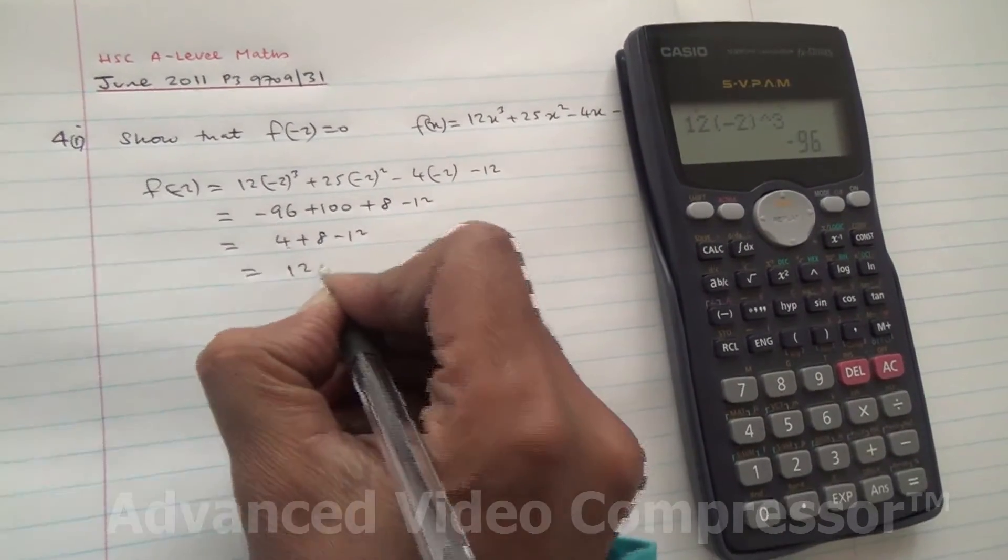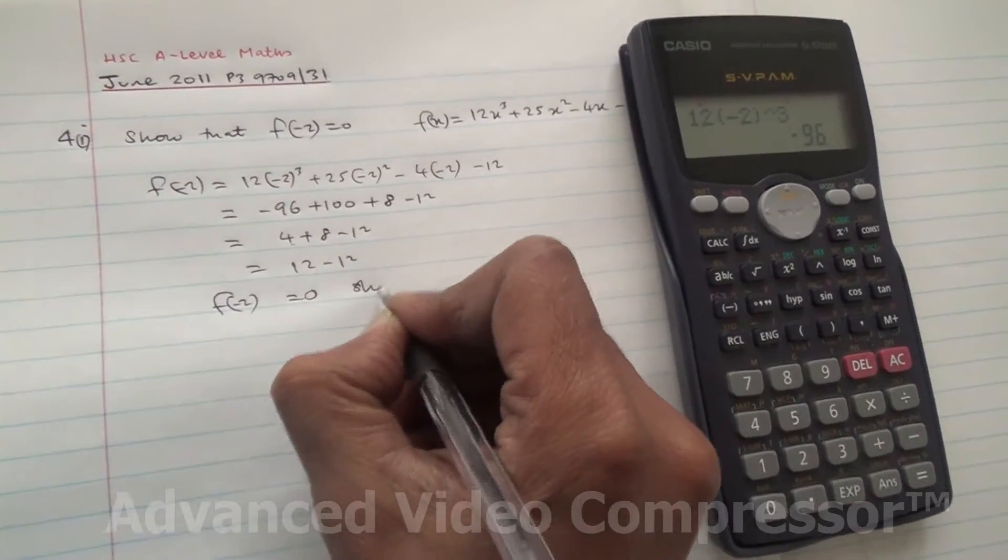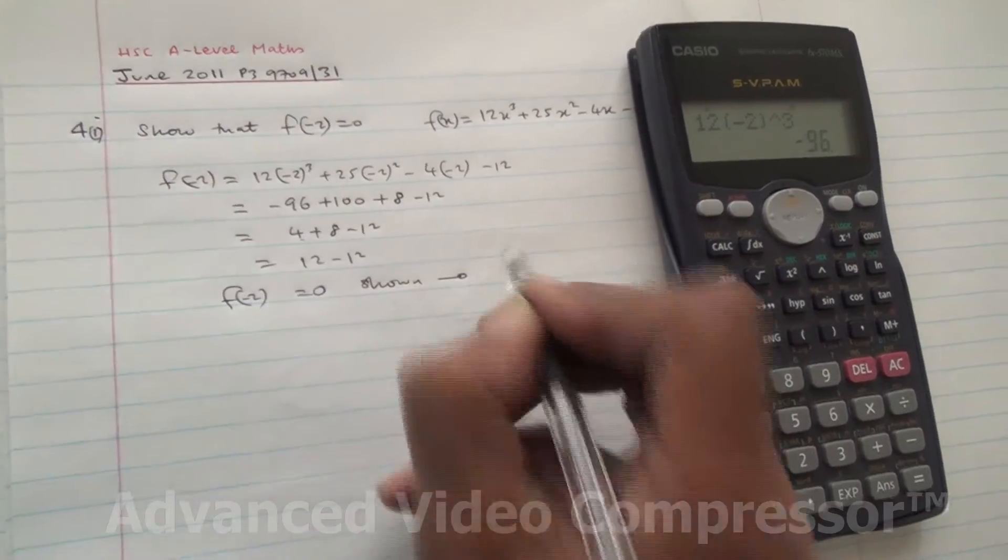4 plus 8 is 12. 12 minus 12 is 0. So f(-2) has been shown to be equal to 0. Here we are for the first part.